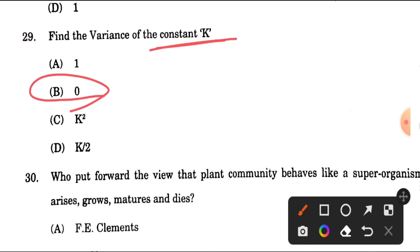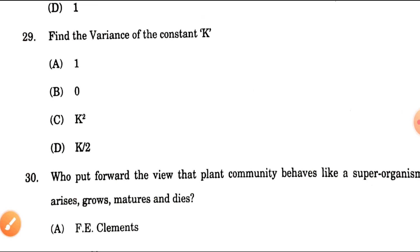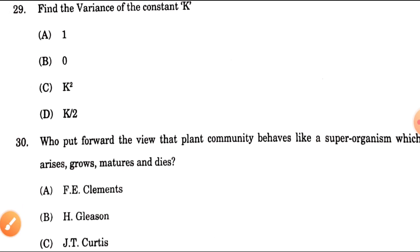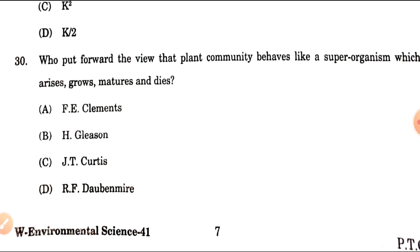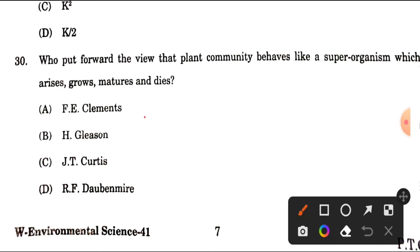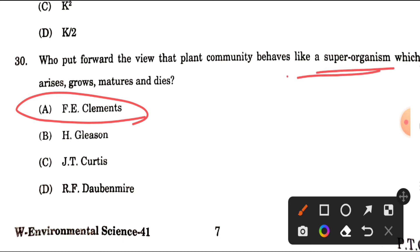Question number 30: Who put forward the view that a plant community behaves like a super organism which arises, grows, matures, and dies? This view was given by Clements. So the answer is option A — F.E. Clements — who proposed the super organism theory.